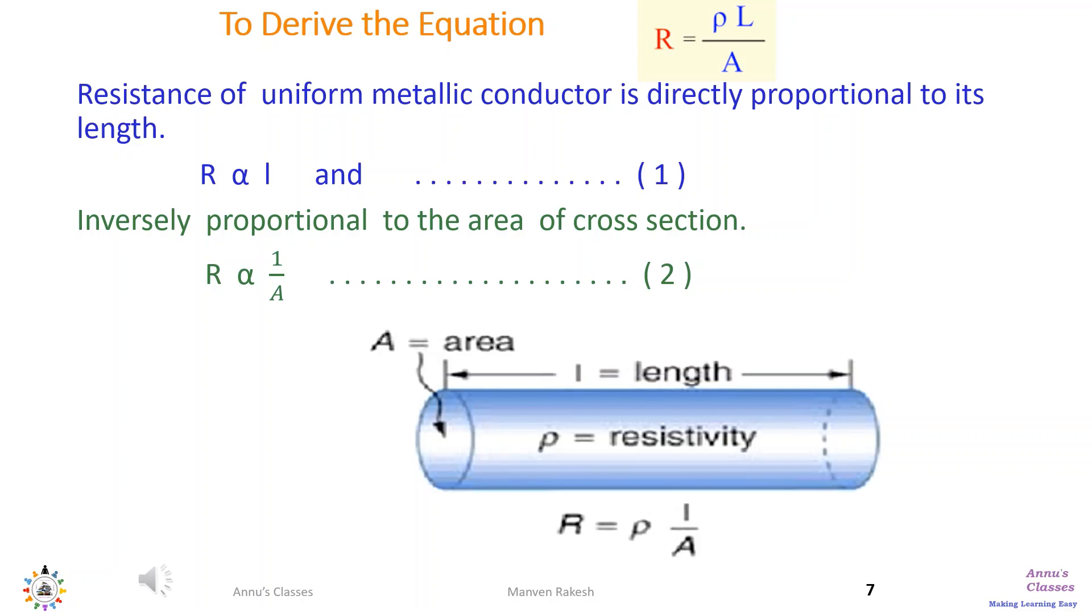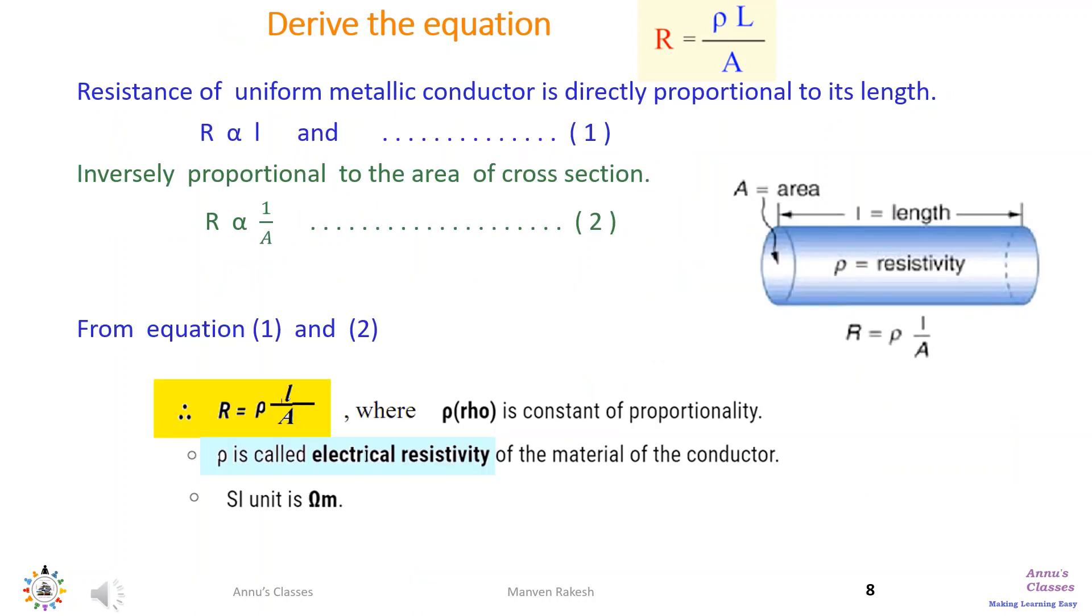Putting this information in equation form, we get two equations. Number one, resistance is directly proportional to the length L and inversely proportional to the cross-sectional area A. Summing up the two equations, we get R is equal to rho into L by A, where rho is assigned to remove the proportionality symbol. The unit of rho, that is electrical resistivity, is ohm meter.